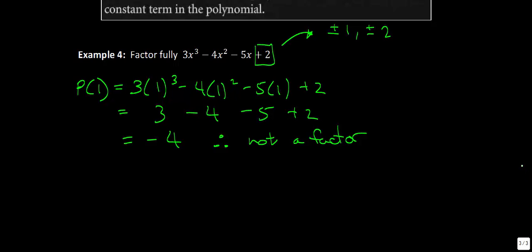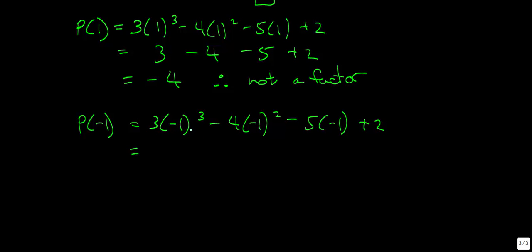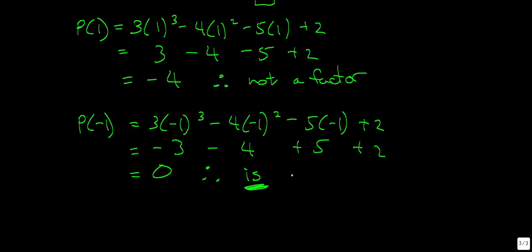Let's try negative 1. Substituting p(negative 1): 3 times negative 1 cubed minus 4 times negative 1 squared minus 5 times negative 1 plus 2. Simplifying: negative 3 minus 4 plus 5 plus 2 gives negative 7 plus 7, which equals 0. So x plus 1 is a factor.